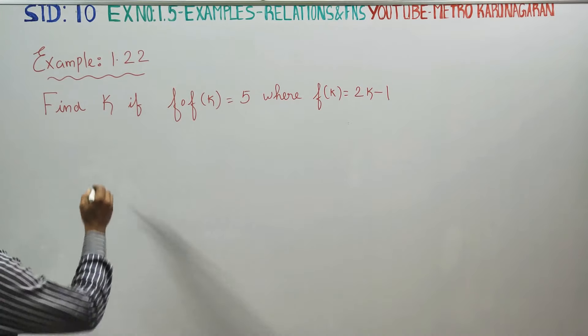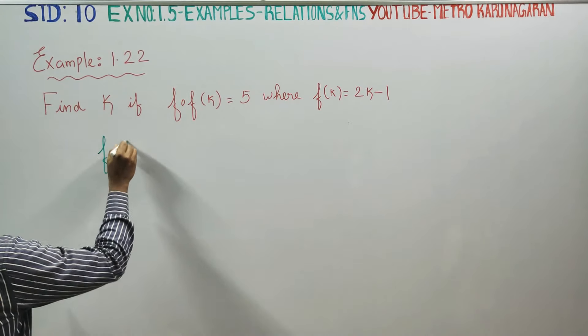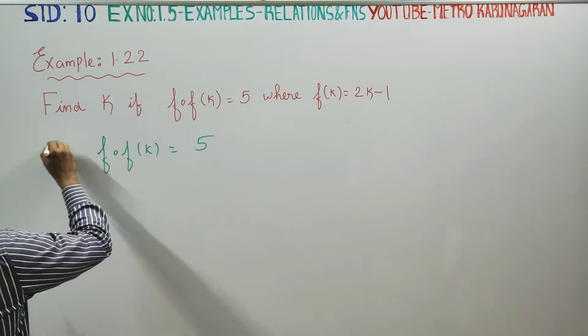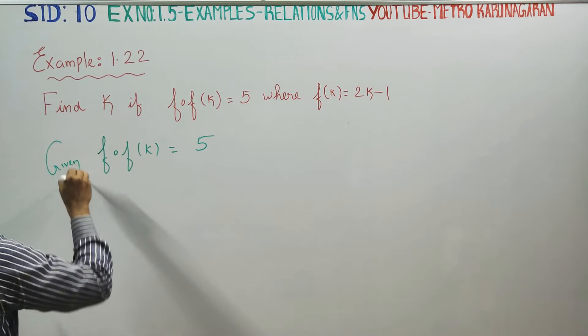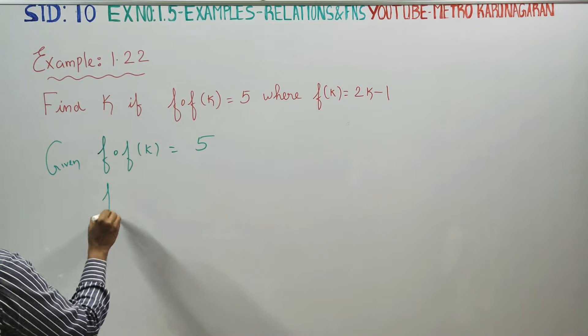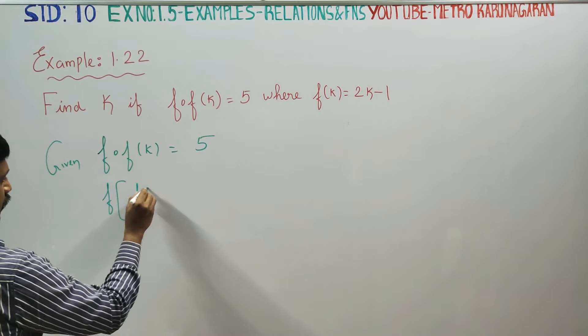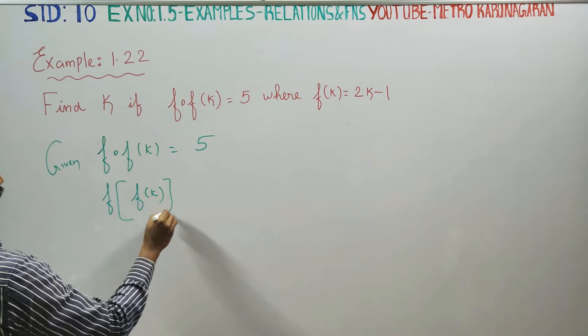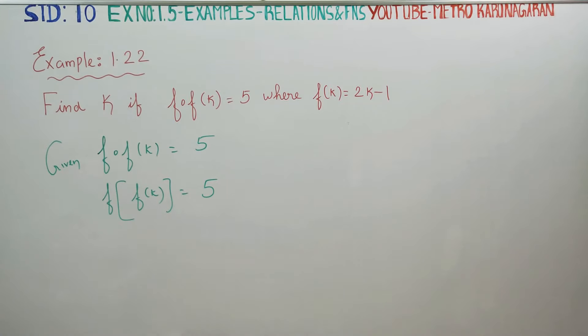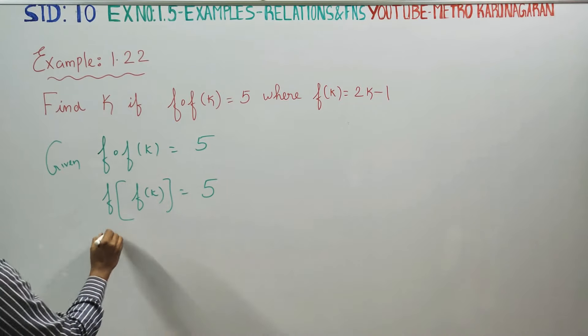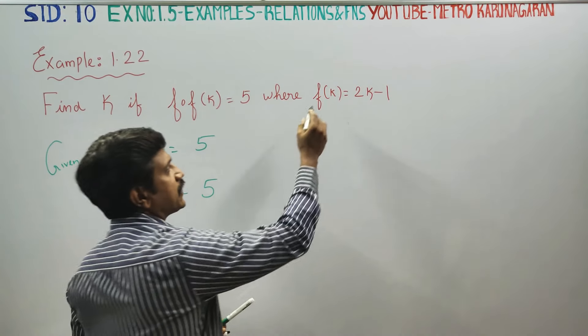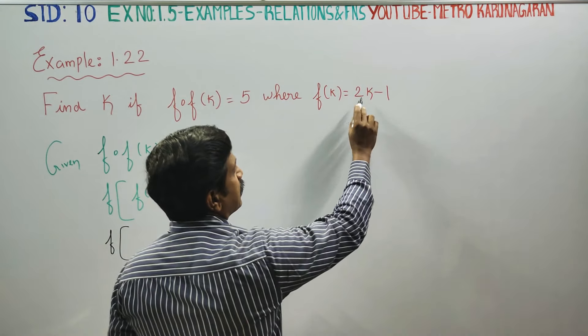It is given that f of f of k is equal to 5. The composition is equal to 5. What is f of k? f of k is defined by 2k minus 1.